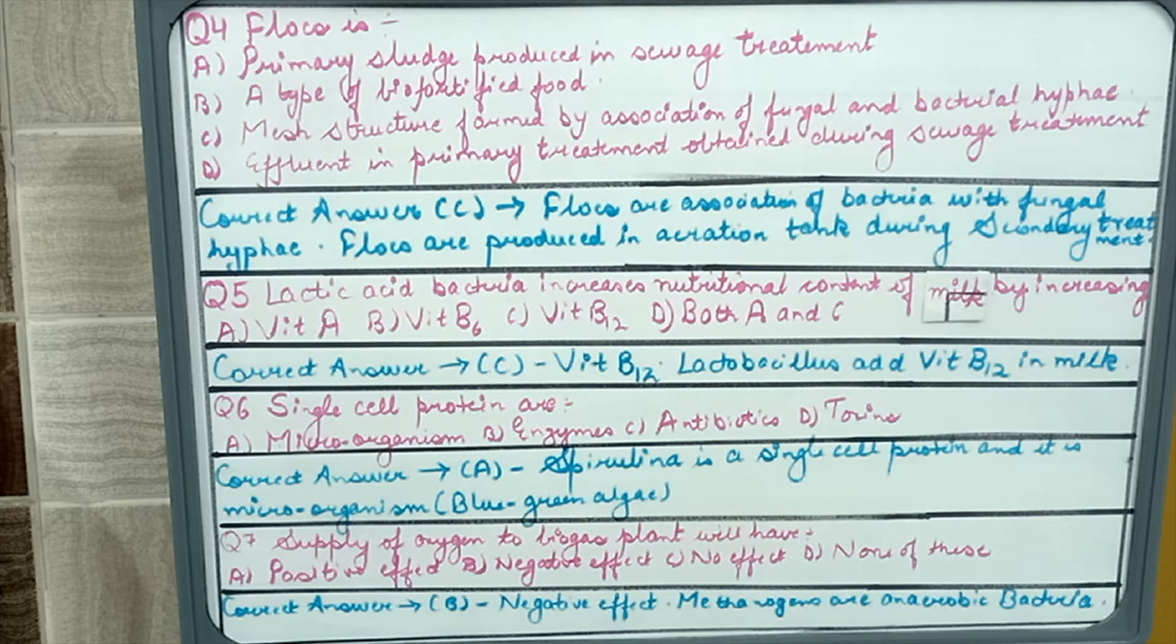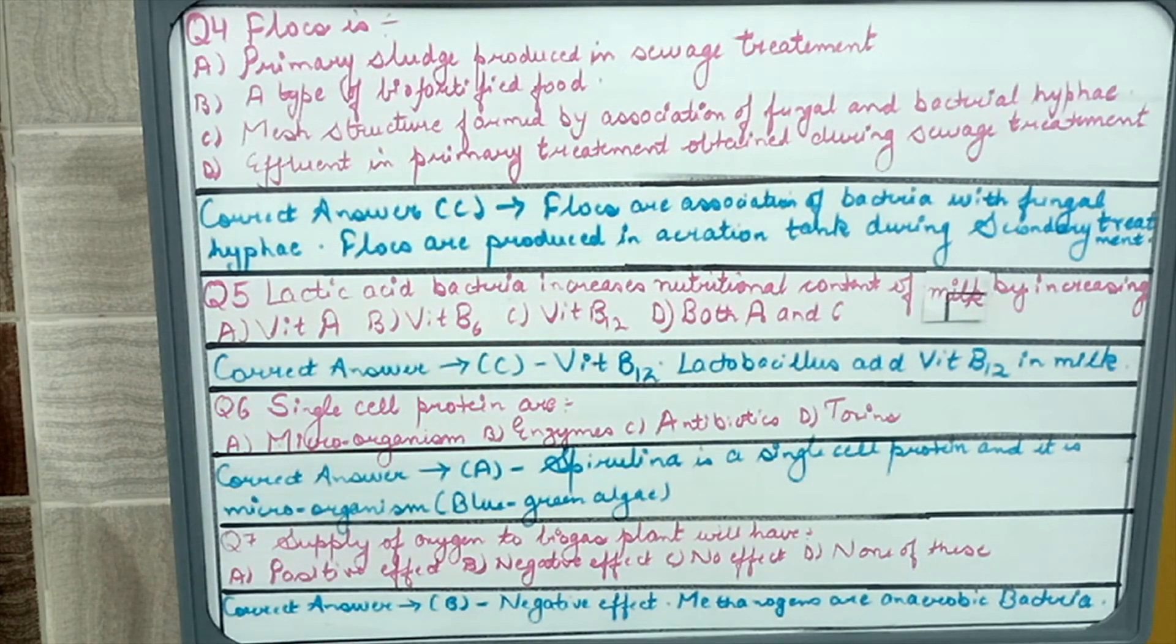Question number six: single cell proteins are microorganisms, enzymes, antibiotics, or toxins. The answer is microorganisms. We know that Spirulina which is a blue green algae is used as single cell protein. It is a microorganism, a blue green algae which comes under kingdom Monera. This question is also directly from NCERT.